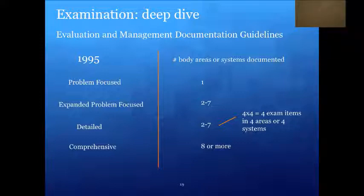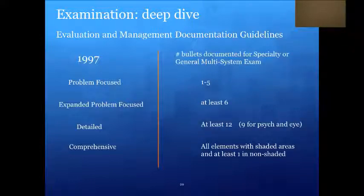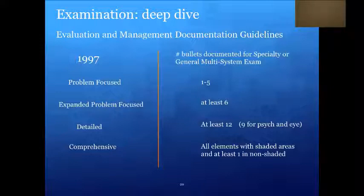You do not need to be an ophthalmologist or a specialist to perform and document a specialty exam per 1997 guidelines. The 1995 examination criteria depend on how many body areas are examined and documented. Both expanded problem-focused and detailed have two to seven areas, though CMS has not clarified the difference. Medicare Administrative Contractors such as Novitas have defined a detailed examination as two to seven areas along with at least four items in four body areas or systems — coders call this the four-by-four rule. The 1997 guidelines count the number of bullets, and some specialties such as psych and eye only require nine bullets to reach a detailed level.